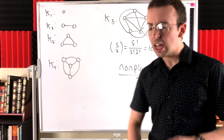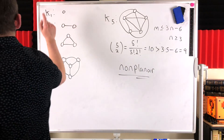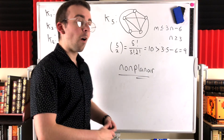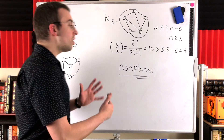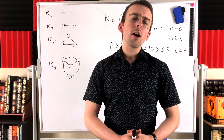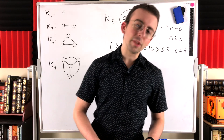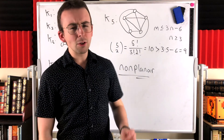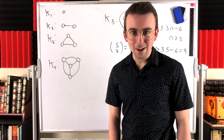So there is our answer: which complete graphs are planar? That would be K1, K2, K3, and K4. Which ones are non-planar? All the rest of them. Hope this video helped you understand which complete graphs are planar and why. Let me know in the comments if you have any questions, need anything clarified, or have any other video requests. Thank you very much for watching — I'll see you next time, and be sure to subscribe for the swankiest math lessons on the internet.